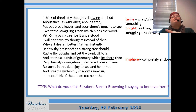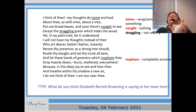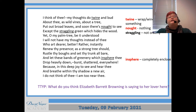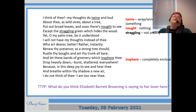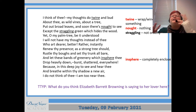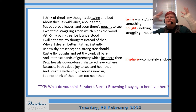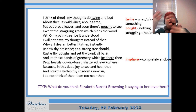Enjambment is when a line in a poem doesn't stop at the end of the line — it carries on and on into new lines. For example: 'my thoughts do twine and bud about thee as wild vines about a tree put out broad leaves and soon there's nought to see except the straggling green which hides the wood' — that's three and a half lines long, so that's enjambment. It creates the idea that her thoughts are carrying away; she's not able to think clearly, her thoughts are all over the place when she thinks about him or when she's sexually excited.